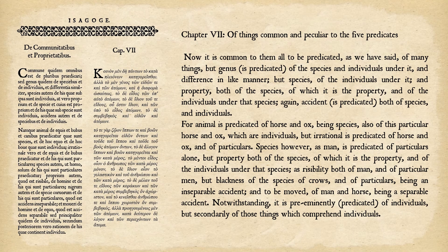Chapter 7, Of Things Common and Peculiar to the Five Predicates. It is common to them all to be predicated of many things. But genus is predicated of the species and individuals under it, and difference likewise. Species is predicated of the individuals under it. Property is predicated both of the species of which it is the property and of the individuals under that species. Again, accident is predicated both of species and individuals.